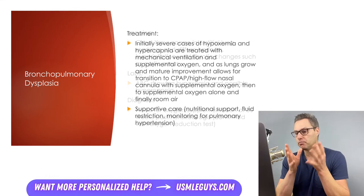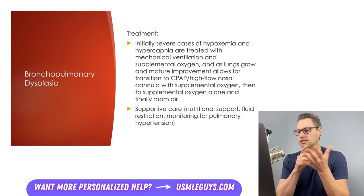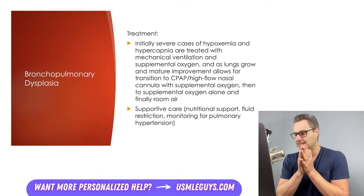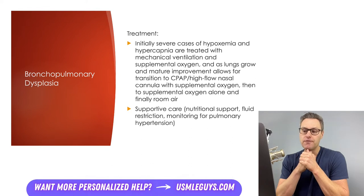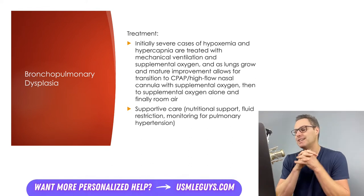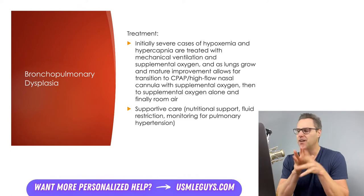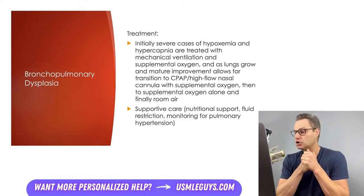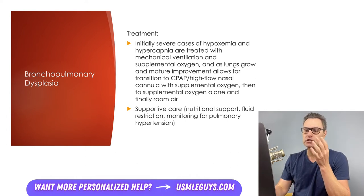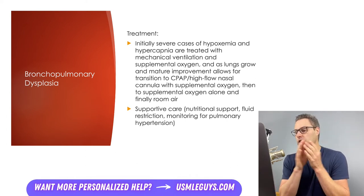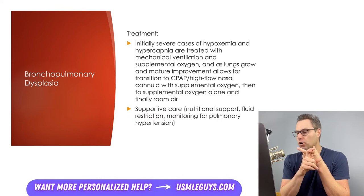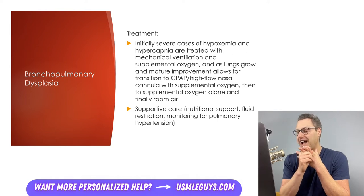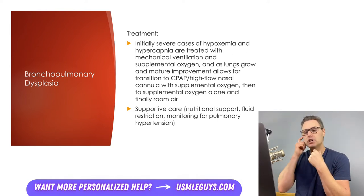Patients will usually show improvement over time as they age and as the lungs mature. However, those with the most serious cases will continue to require mechanical ventilation and supplemental oxygen, followed by weaning to either CPAP or high flow nasal cannula with supplemental oxygen, eventually just requiring supplemental oxygen alone, and eventually being able to breathe solely on room air. For patients requiring mechanical ventilation, low tidal volumes are used to avoid volume trauma, and positive end-expiratory pressure of around 5 is used to avoid atelectasis.